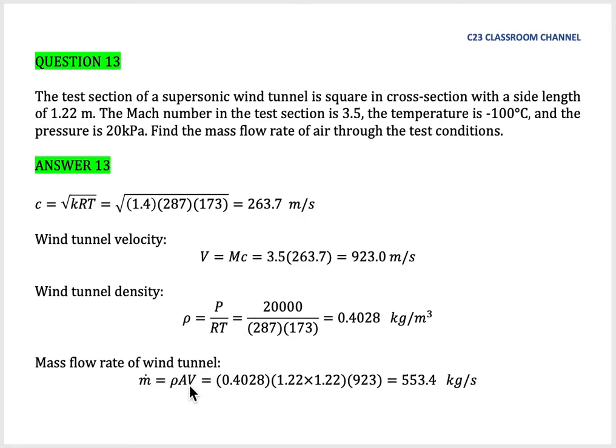The mass flow rate of the wind tunnel can be calculated using this equation: rho AV. Rho is 0.4028 as we calculated.